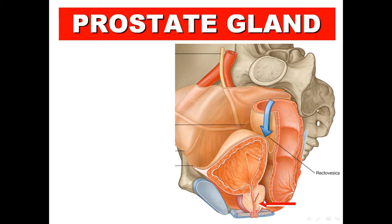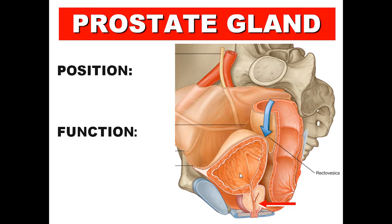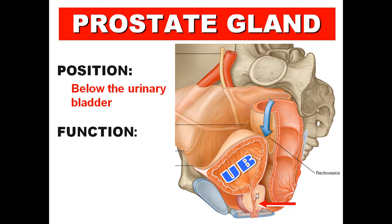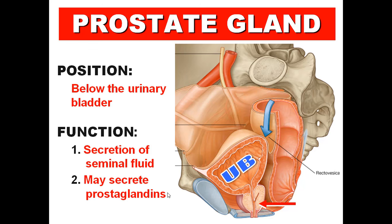The prostate gland lies below the urinary bladder. Its functions are: secretion of fluid added to the seminal fluid, and it may secrete prostaglandins, although the main source of prostaglandins is the seminal vesicle, as well as other glands in the body such as the submandibular salivary gland.